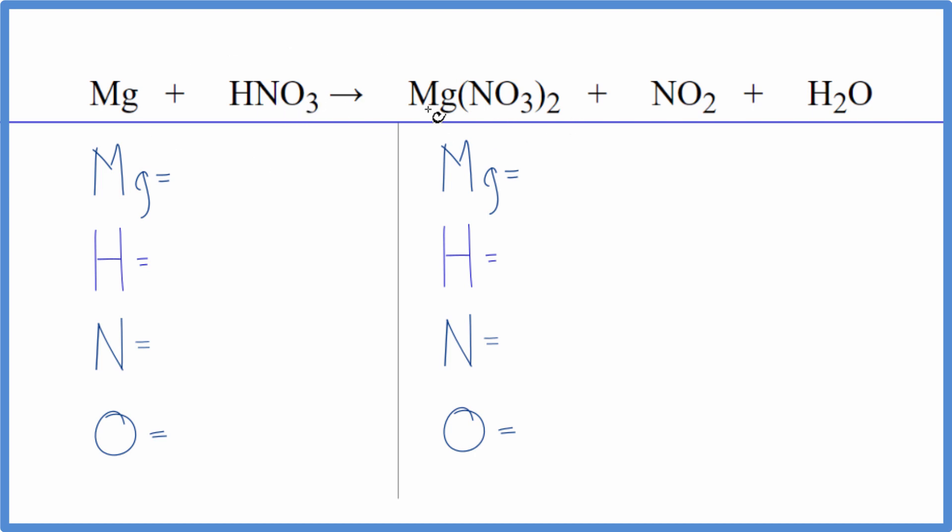Let's count the atoms up first and then balance the equation. We have one magnesium, one hydrogen, and even though we do have a nitrate ion on both sides, because we have this other nitrogen here, let's make sure we just split everything up into individual atoms. So we have one nitrogen and three oxygens.